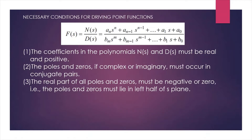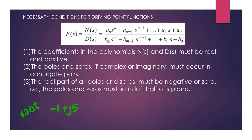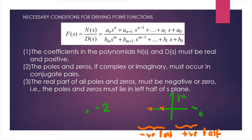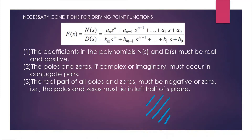The third condition: the real part of the poles or zeros must be negative or zero — that is, they must lie in the left half of the s-plane. So if there is a root like −1 + j5 or −2, all of these must be in the negative half of the s-plane.